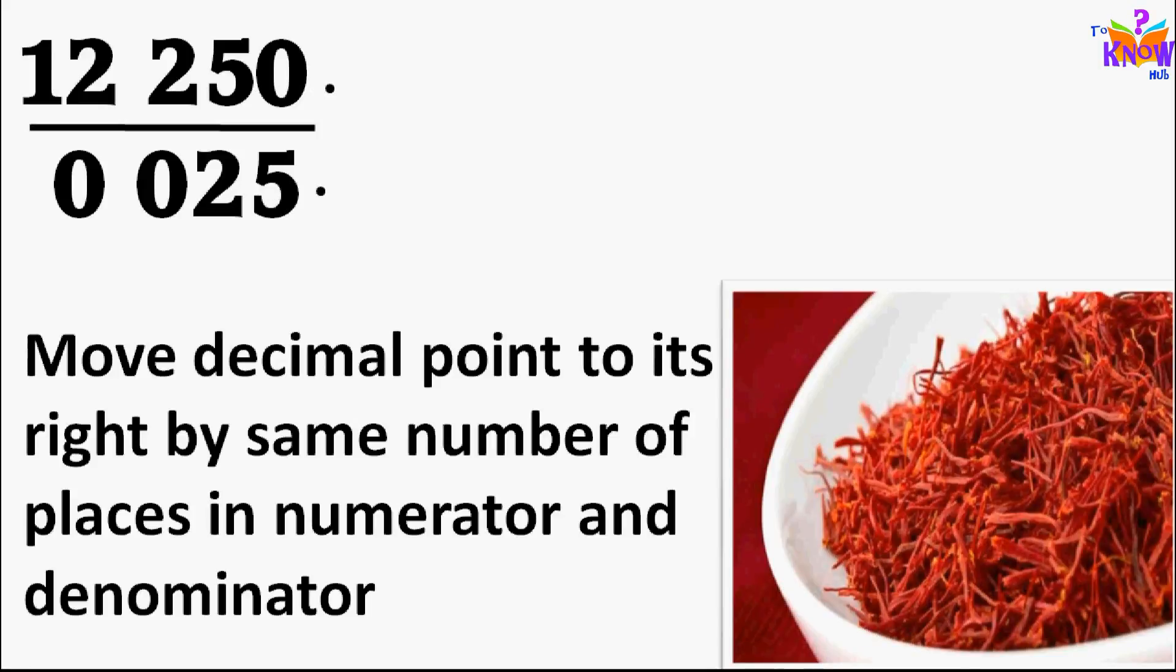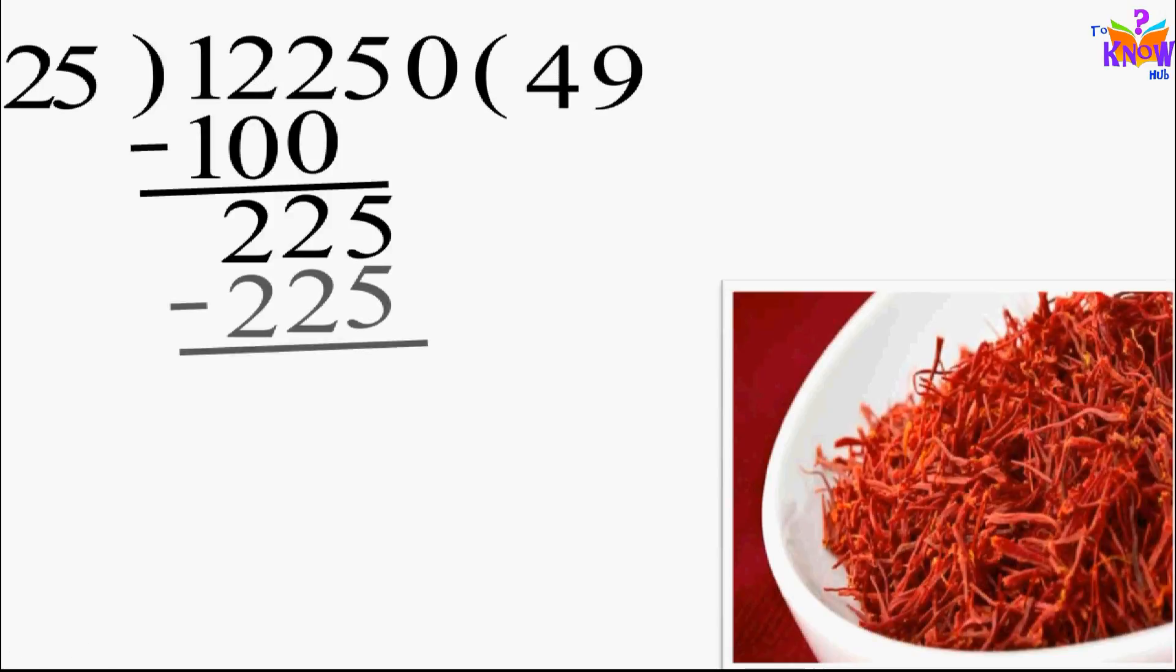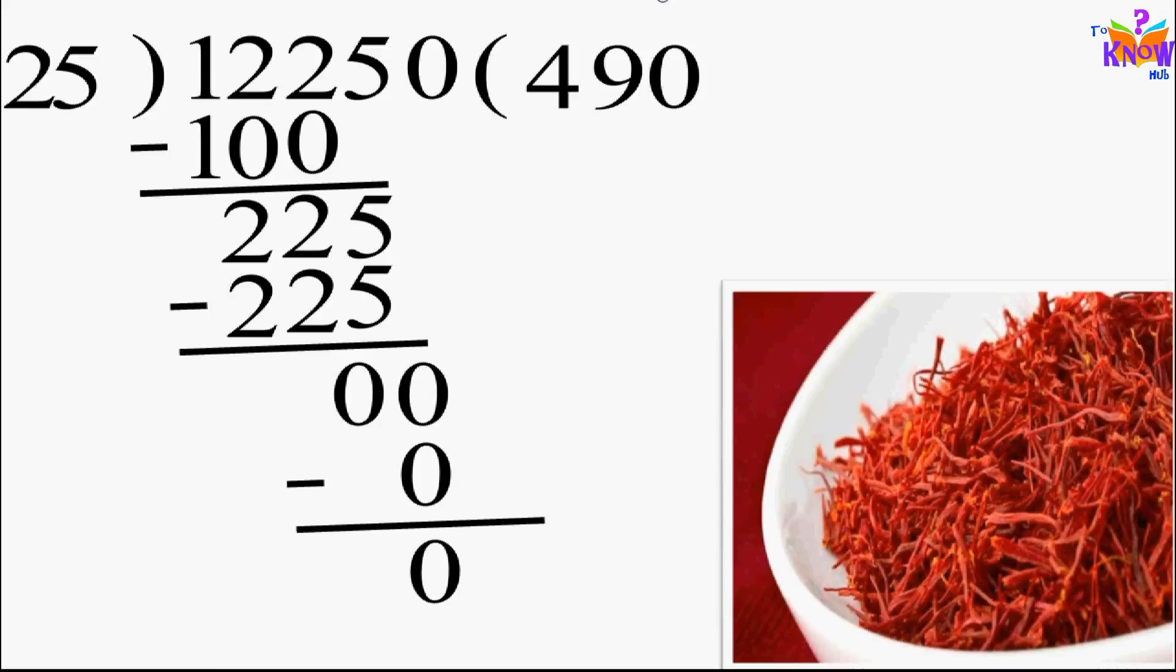12.250 divided by 25. So now it's a simple division. 12 is less than 25, so we take 122 to start with. 4 times 25 is 100. 122 minus 100 is equal to 22. 5 comes down. 225 by 25 is equal to 9, because 9 times 25 is 225. 0 comes down. 0 times 25 is 0. So answer is 490.